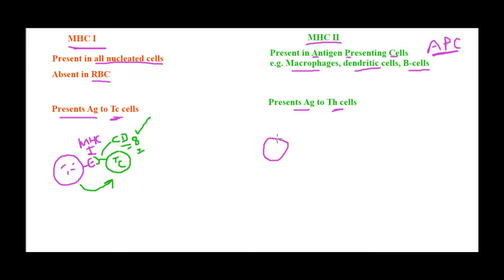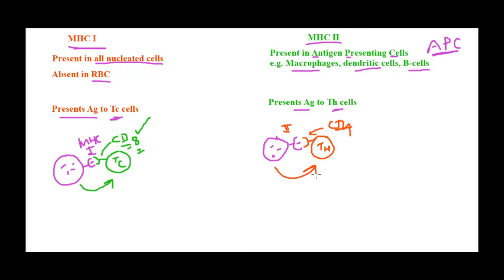MHC class 1 always presents the antigen to TC cells because TC cells have the CD8 receptor that recognizes the MHC class 1–antigen complex. In the case of MHC class 2, the antigen-presenting cell presents the antigen to T helper cells. The T helper cell has a cell-surface receptor called CD4, which recognizes the MHC class 2–antigen complex. So MHC class 2 presents antigen only to T helper cells because they have CD4.